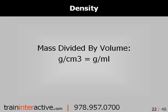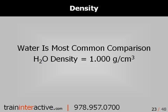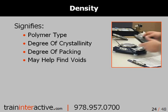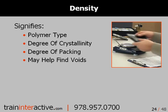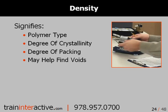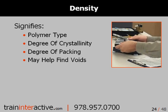Density is a measure of mass or weight divided by volume. In most cases, density is provided as grams per centimeter cubed. Water is the most commonly used comparison since one cubic centimeter or a milliliter of water weighs one gram. Different polymer types will have different densities. Additionally, higher degrees of packing and crystallinity will result in increased density.